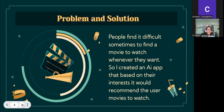Problem and solution. People have found it difficult sometimes to decide which movie to watch whenever they want. So I created an AI app that, based on their interests, will recommend the user movies to watch.